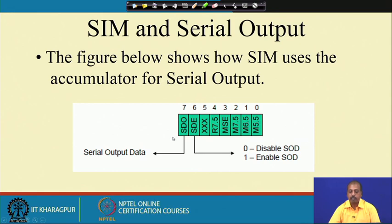The SDO bit holds the data to be sent to the outside through this pin. If you want to transmit some bit serially, put the bit in bit number 7 of the accumulator, enable the SDE bit, and then execute the SIM instruction. The bit stored there will be sent through this line. Then put another bit and set SDE to enable again, and the next bit will go through the serial line. This is how SIM can be used for serial transmission of data.